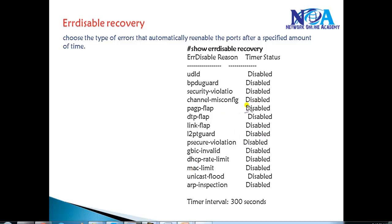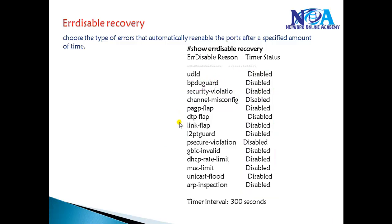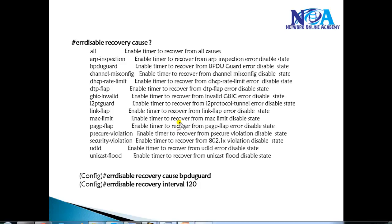By default, all Error Disable Recovery options are disabled, as you can see. These are all the Error Disable Recovery causes we can configure — either for a specific thing like BPDU Guard, security violation, or Layer 2 Guard. To enable for a specific violation, go to config mode and use the command errdisable recovery cause, and in this case I'm enabling it for BPDU Guard.